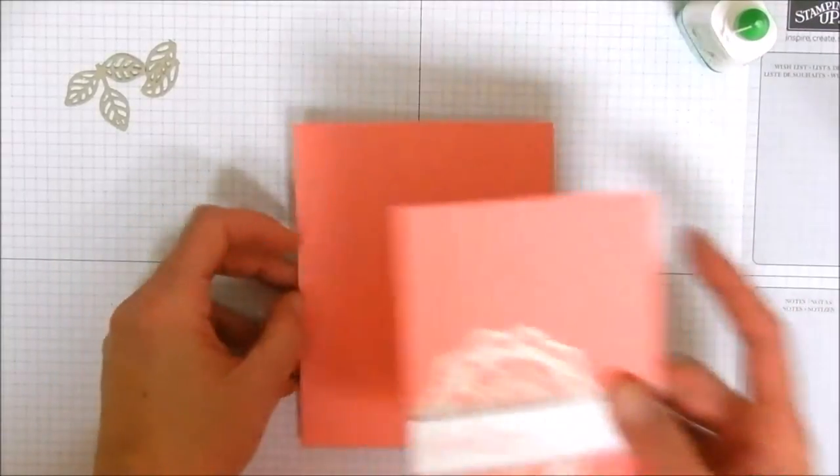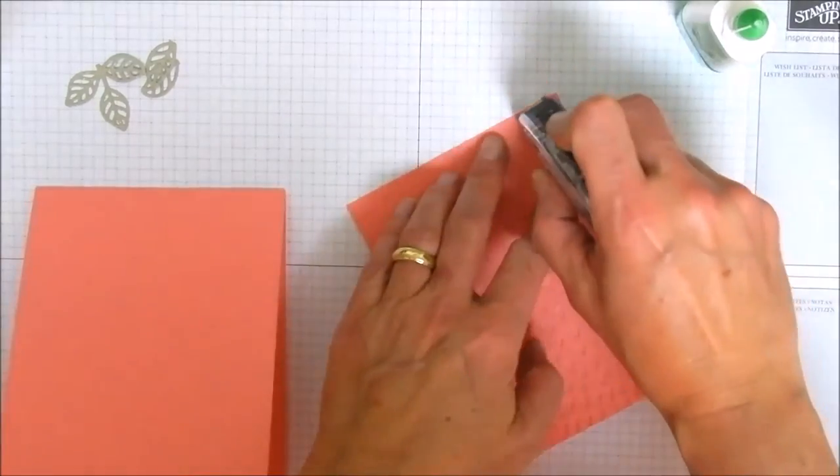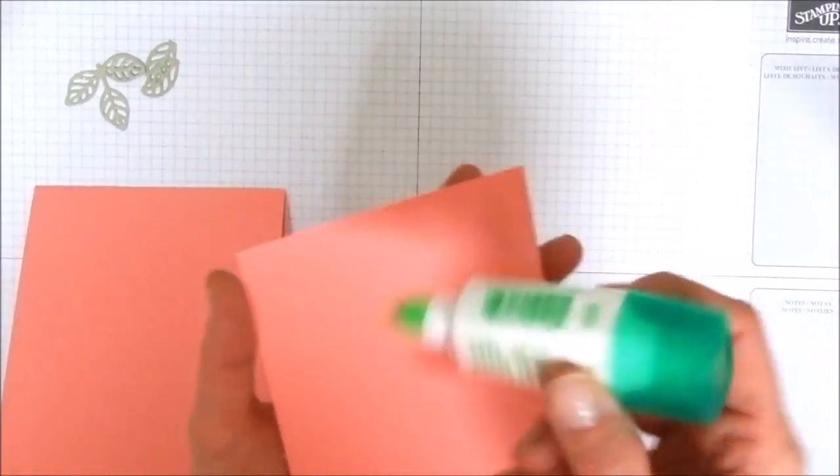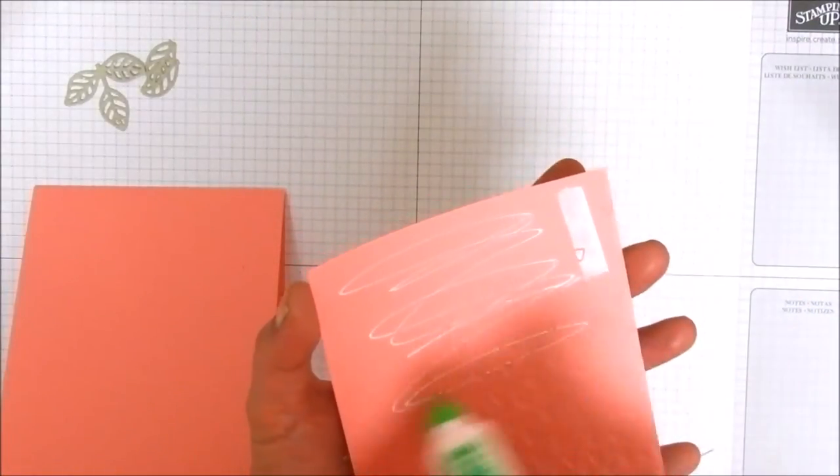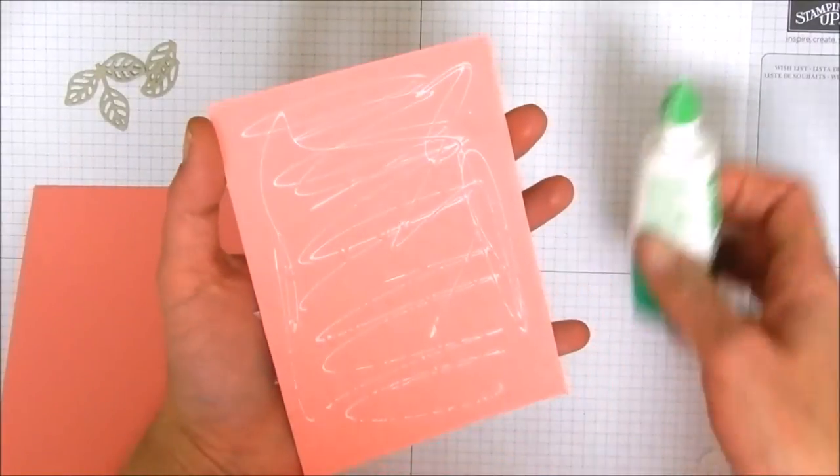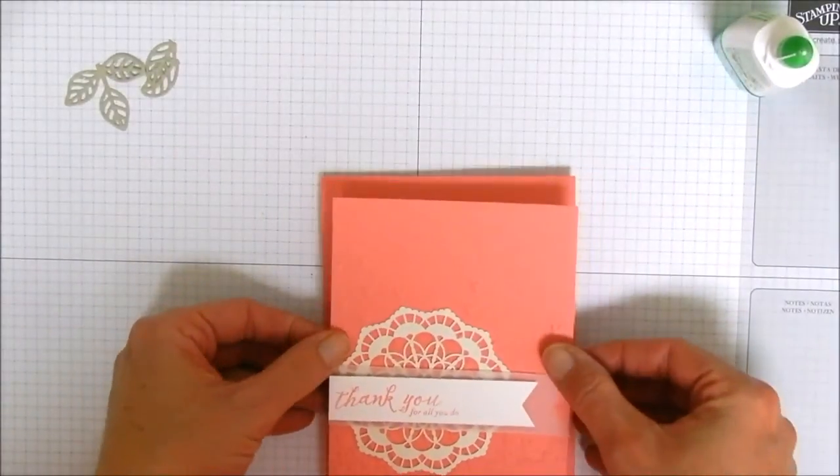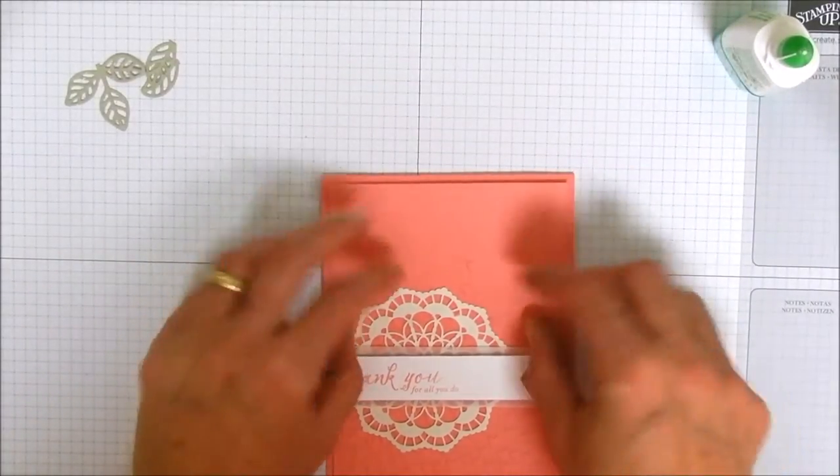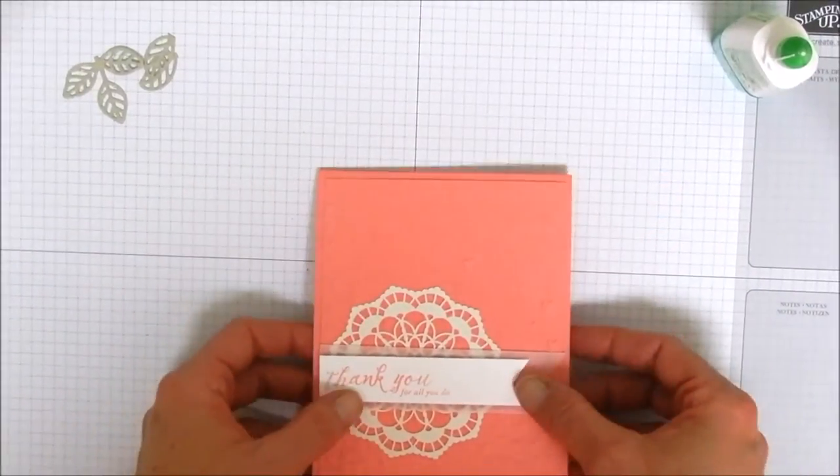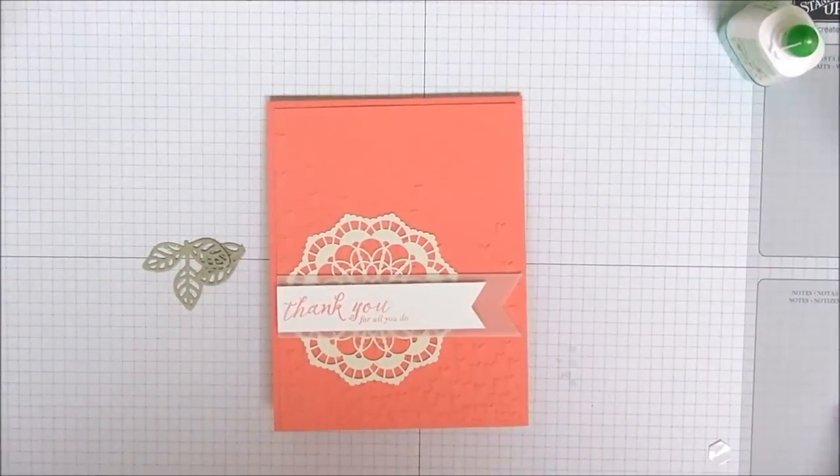And we're going to bring in our card base. We are going to use tombow to attach our layer. We're just going to put some tombow on the back of our layer piece here, not a whole whole lot, and we're going to lay this down centered up with a quarter inch border all the way around. That looks fantastic.